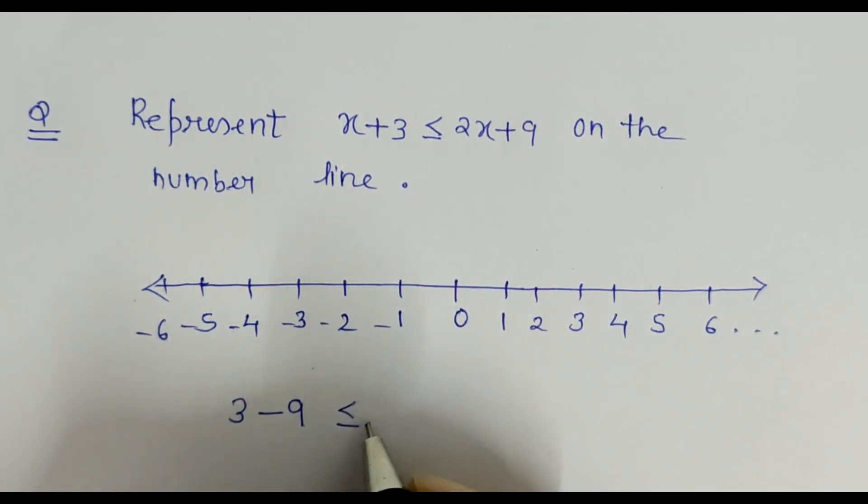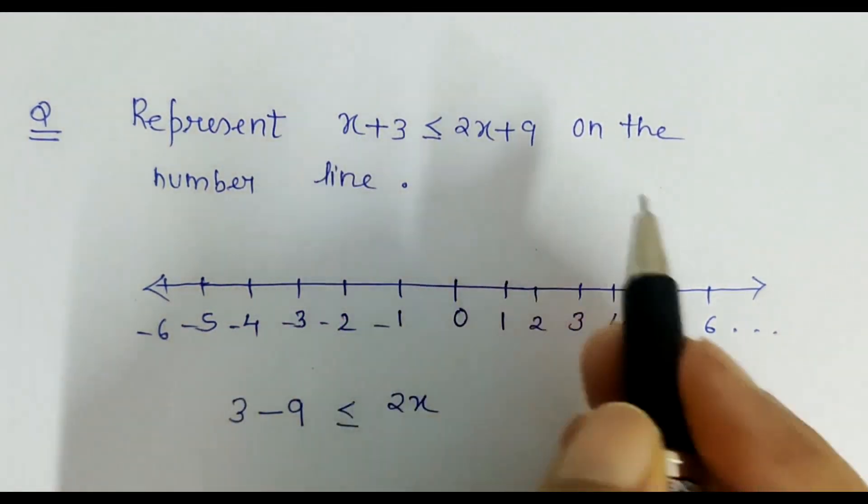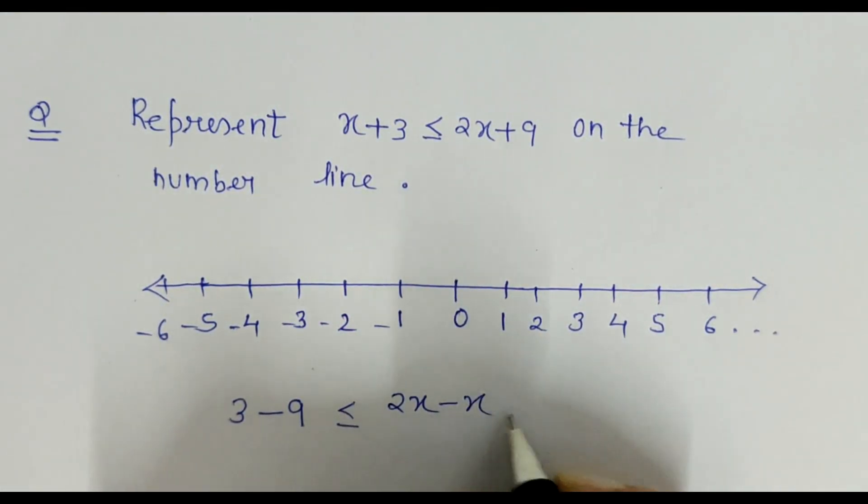...2x as it is, and this x on the right side becomes minus x. So 3 minus 9 is minus 6, less than equal to 2x minus x is x. So it is basically x is greater than equal to minus 6.